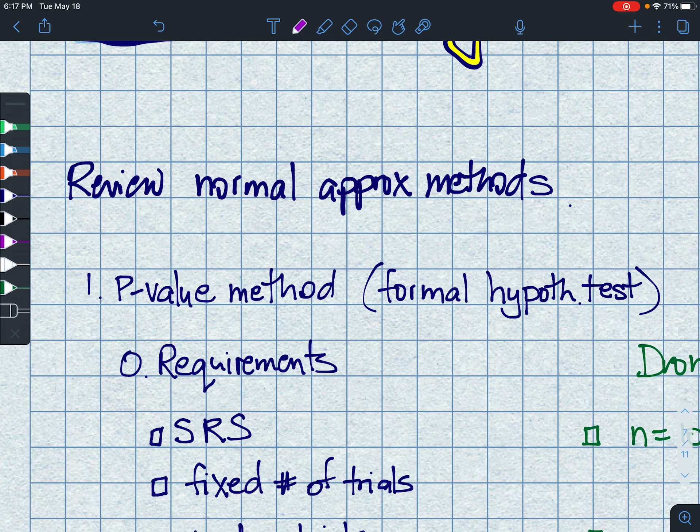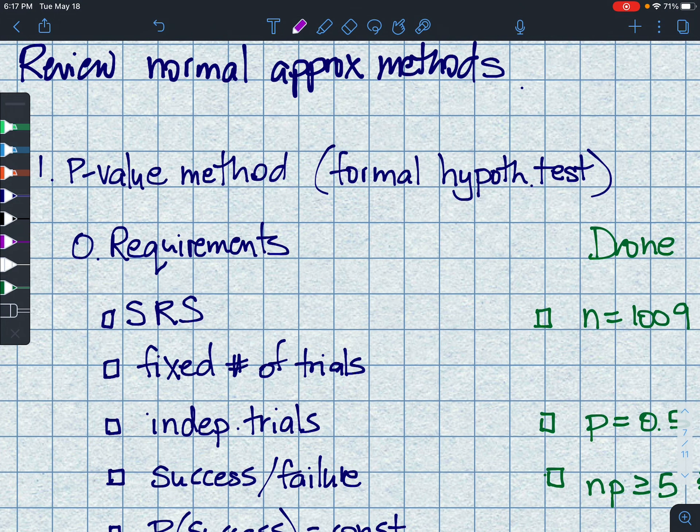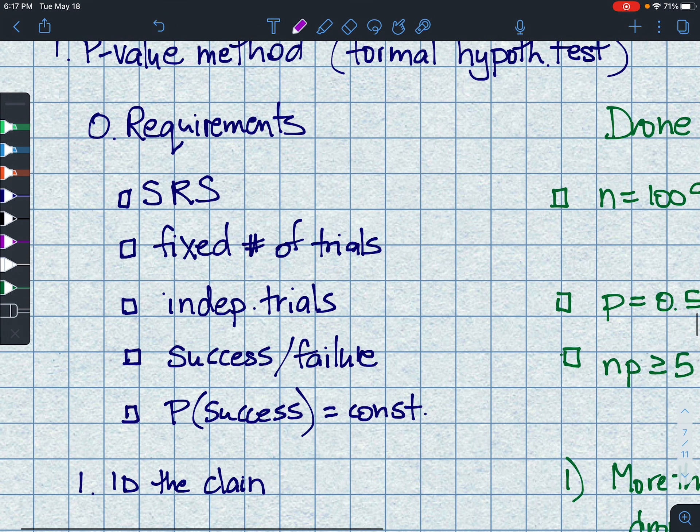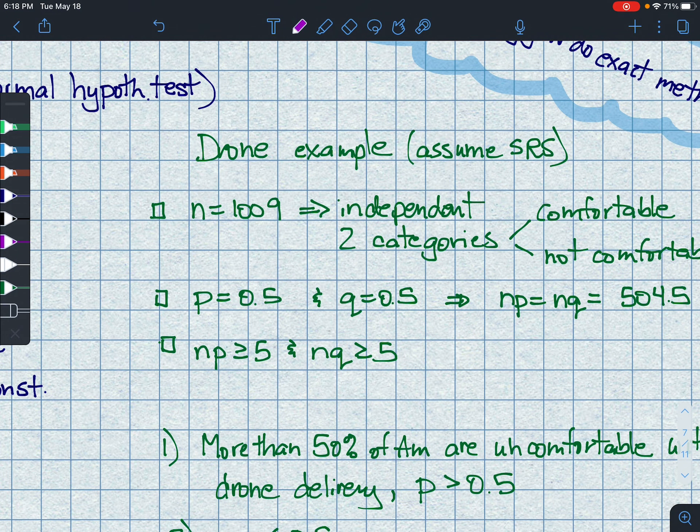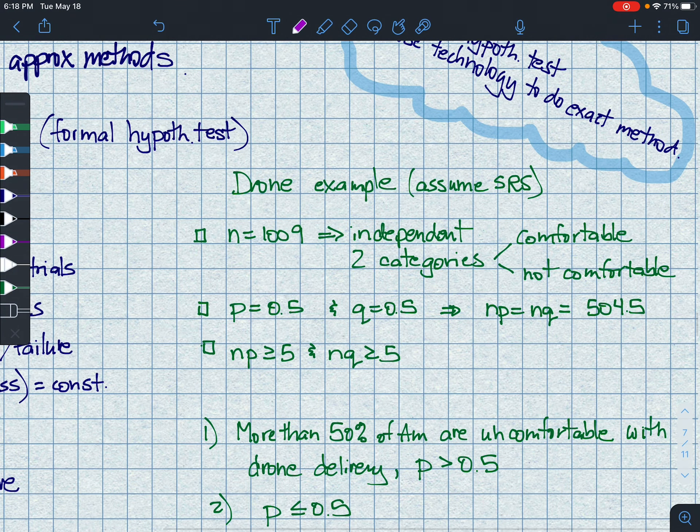So reviewing the normal approximation methods, this is the p-value method where we first of all need to check our requirements. And I'm going to do my example side by side. So these are the basic five requirements. You've got to have a fixed number of trials. They all need to be independent. There's got to be success/failure and our probability of success has to remain constant throughout the process. And in our drone example, we assume the simple random sample and then everything else is given to us. We have 1009 independent samples. There's two categories. They're either comfortable or not comfortable. So we have a probability of success and failure. And our NP times NQ are both greater than five because N is so big. Therefore, we're all done. We've got that.